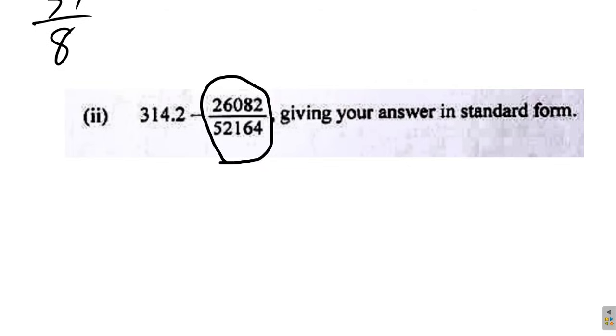So you have this fraction here to work out. You would use a calculator and work it out. Make sure you have your scientific calculator. Now I'm going to just use my calculator here. It says giving your answer in standard form. 26,082 divided by 52,164 equals 0.5. So this is 314.2 minus 0.5. So 314.2 minus that gives us 313.7.